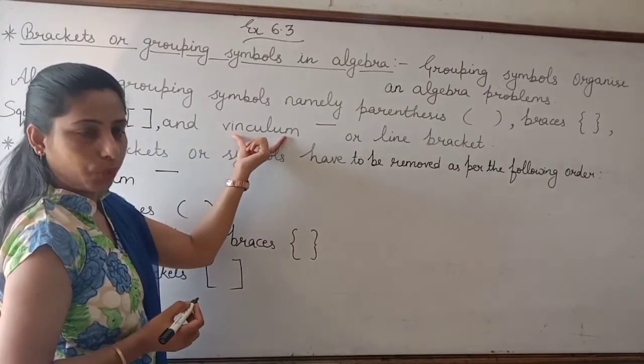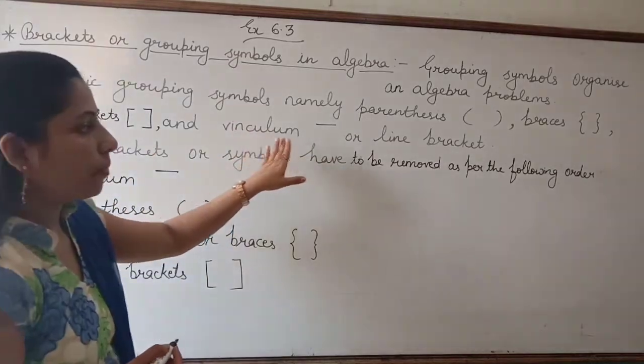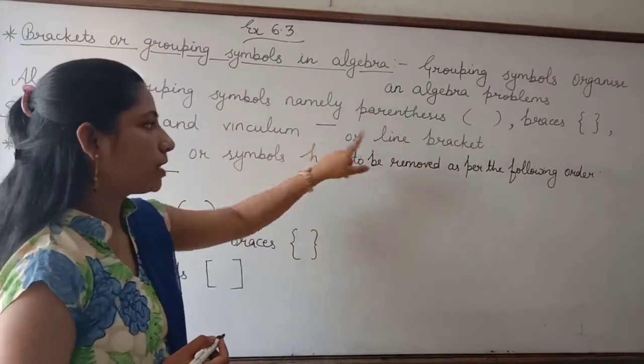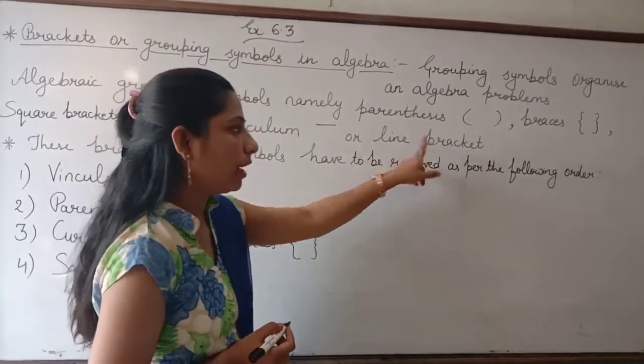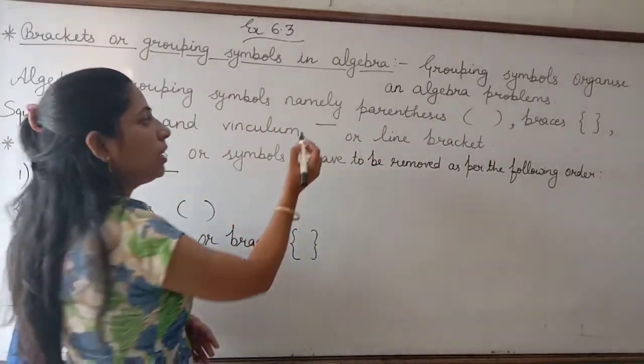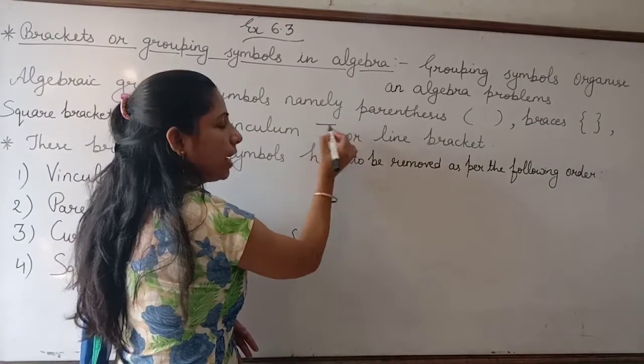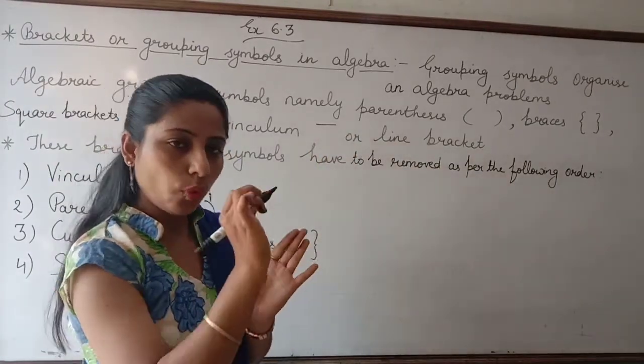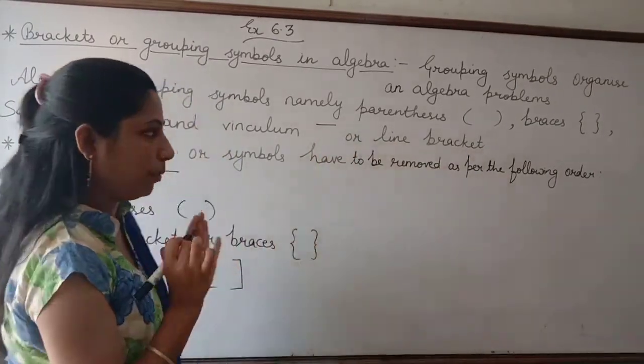These are small brackets, which we call parentheses. This is a curly bracket or braces. This is a square bracket or large bracket, and vinculum. This topic is new for you. We call it line bracket or vinculum.